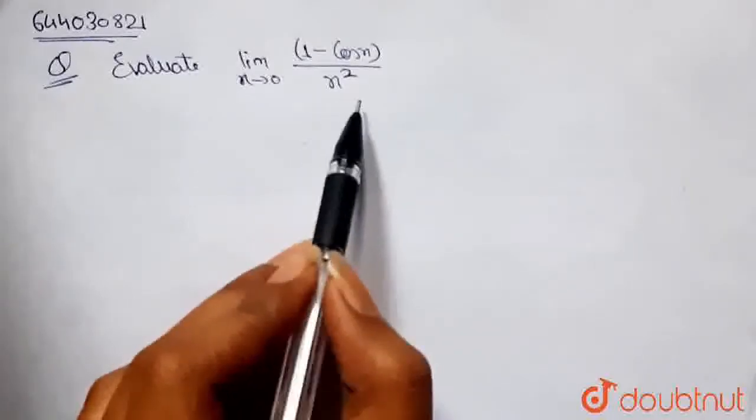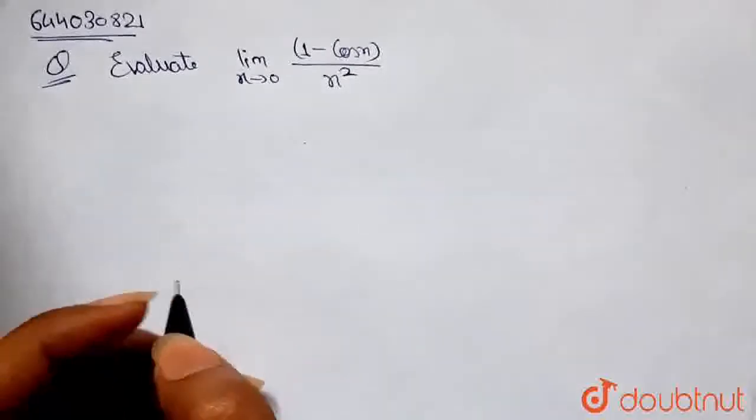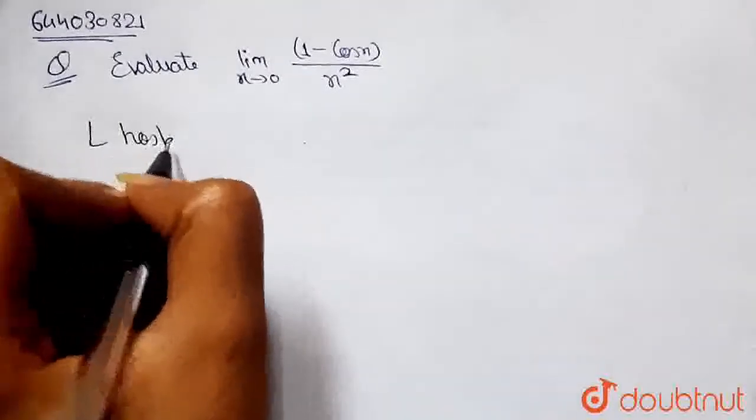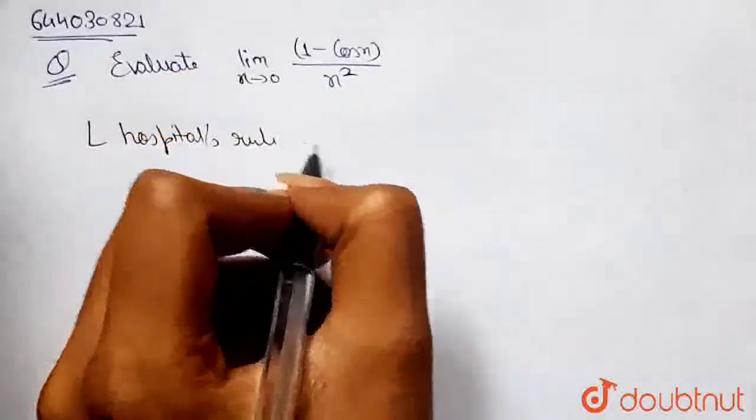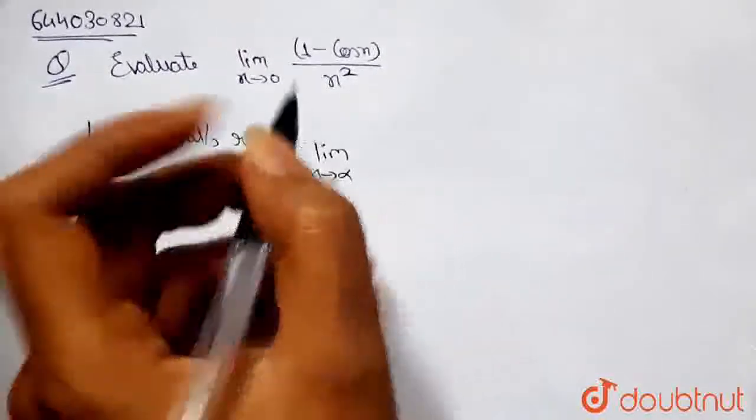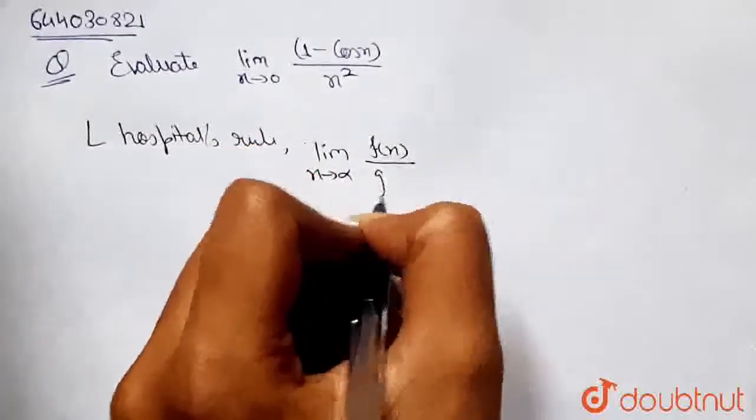In evaluating this limit, I am going to use L'Hospital's rule. Let me tell you what it is. According to this rule, if we have a limit as x tends to some alpha, and we have a function, let's say f(x) divided by g(x),